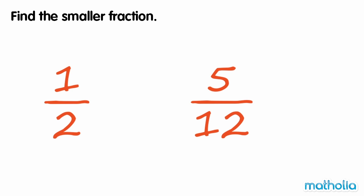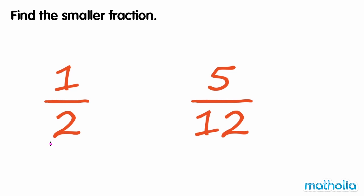Find the smaller fraction. We need to compare one-half and five-twelfths. To compare fractions without drawing a diagram, their denominators need to be the same. One-half has a denominator of two; five-twelfths has a denominator of twelve.